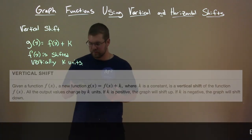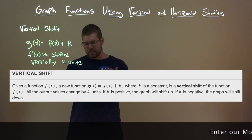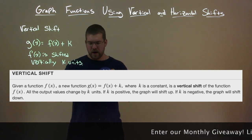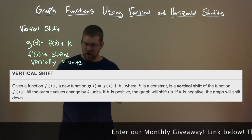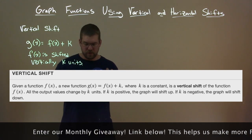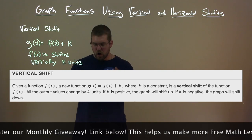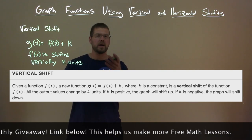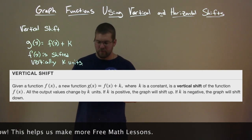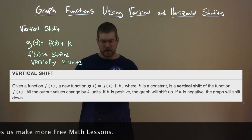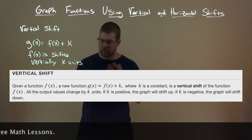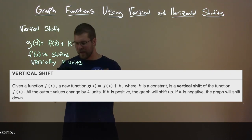So let's see the definition here. Given a function f of x, a new function g of x equals f of x plus k, where k is a constant, is a vertical shift of the function f of x. All the output values change by k units. If k is positive, the graph will shift up. If k is negative, the graph will shift down.